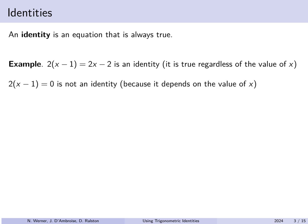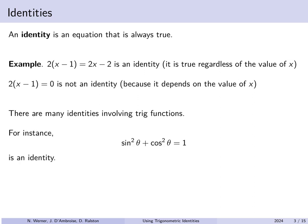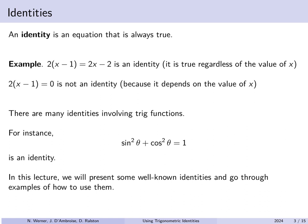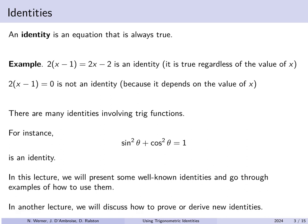But two times x minus 1 equals 0 is not an identity — it is an equation but not an identity, because it may or may not be true depending on the value of x. There are many identities involving trigonometric functions. For example, sine squared theta plus cosine squared theta is always equal to 1 for any angle theta — this is called the Pythagorean identity. In this lecture we will present some well-known identities and go through examples of how to use them.